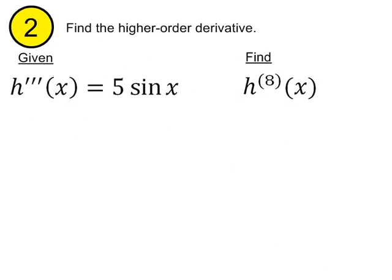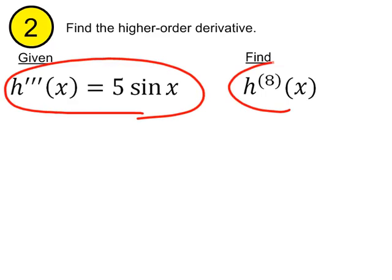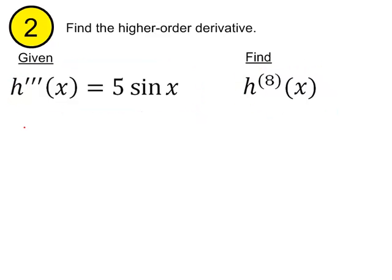Find the higher order derivative when we are given the fact that the third derivative is equal to 5 sine of x, and we're being asked, what's the eighth derivative? I'll remind you that we typically use the notation h prime for the first derivative, h double prime, h triple prime for the second and third derivative, respectively.